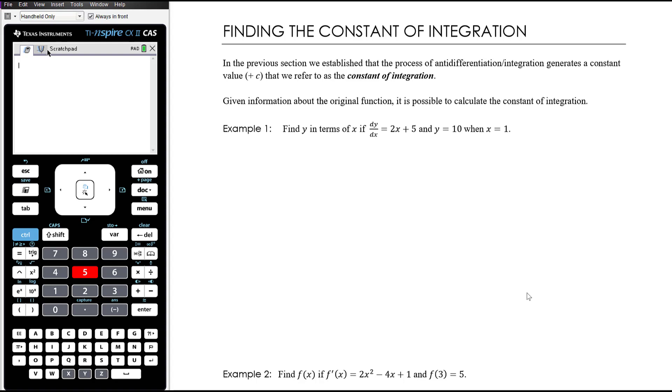When we're reversing that process it disappears because it becomes zero, and when we reverse that process it's impossible to know whether there was a constant term or not, and so we always write plus c. Now if you have extra information in the problem it might be possible to work out the value of c. So let's have a look at some examples where that might happen.